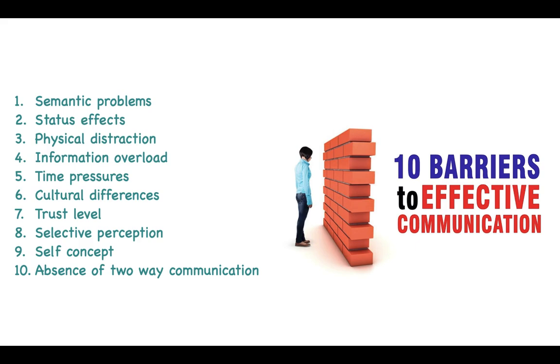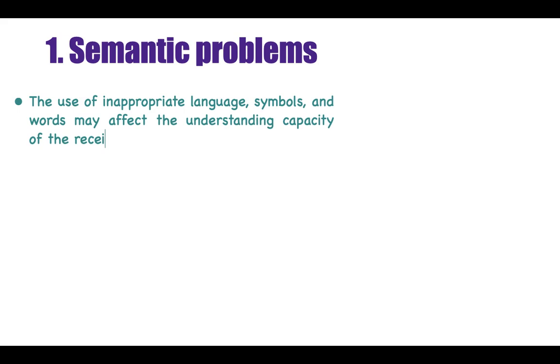The 10 barriers are: semantic problems, status effects, physical distraction, information overload, time pressures, cultural differences, trust level, selective perception, self-concept, and absence of two-way communication. Now let's see these ten barriers in a little detail.